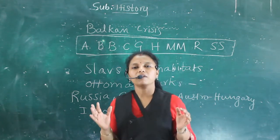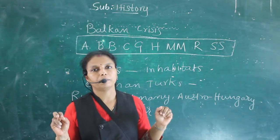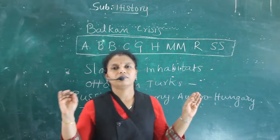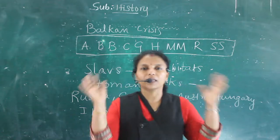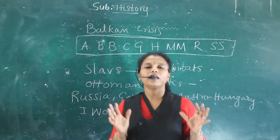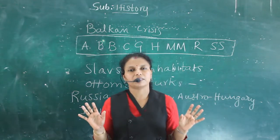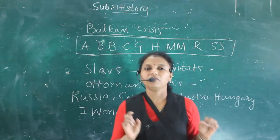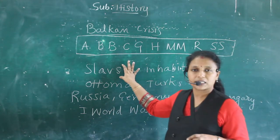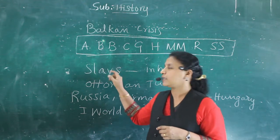The Balkan area is one of the important areas in Europe. Around 8 states were there in the Balkan area. The original inhabitants of the Balkan region were the Slavs.